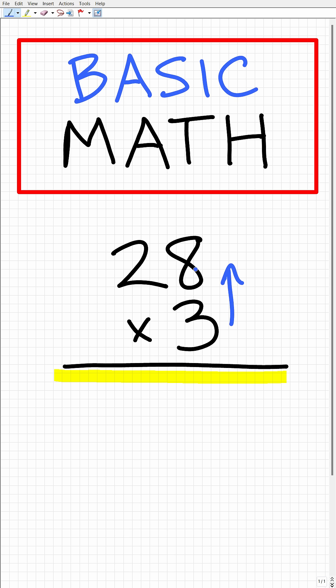We're going to take this three and multiply it by eight. So that is 24. Okay, so we're going to put our four down here. And then we're going to put this two over here in this column.